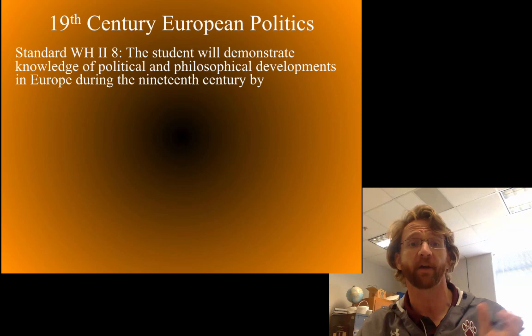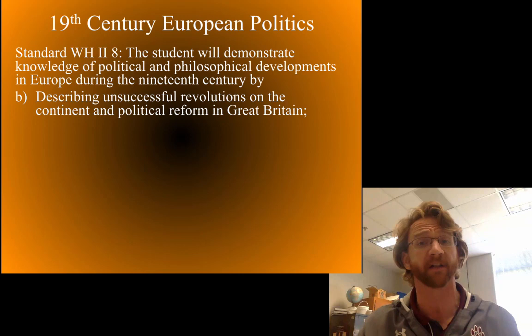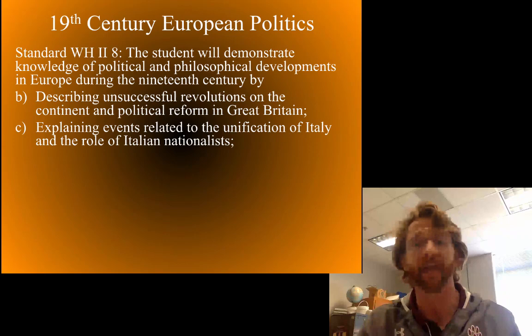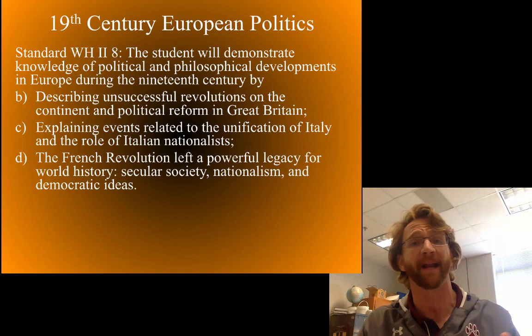Here are what we're going to be talking about. We're going to look at political and philosophical movements in Europe in the 19th century, unsuccessful revolutions on the continent, and what happens in Great Britain and how they avoided revolutions. We're also going to look at the unification of Italy and the unification of Germany.